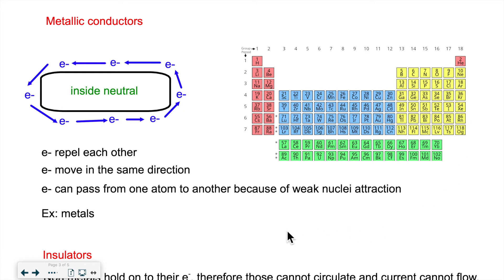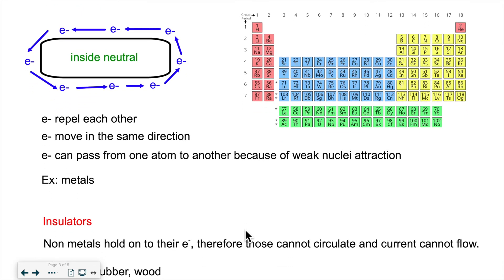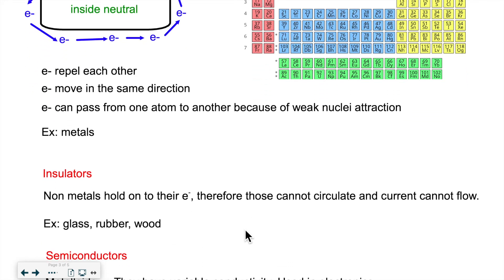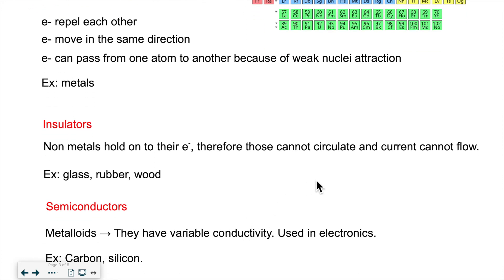So metals are conductors. Then we have insulators, which are the opposite — basically the non-metals. They hold on to their electrons very strongly, so the electrons cannot move and current cannot flow. Substances that don't conduct electricity are called insulators. Non-metals tend to be insulators; more specific examples would be glass, rubber, wood, and plastic.